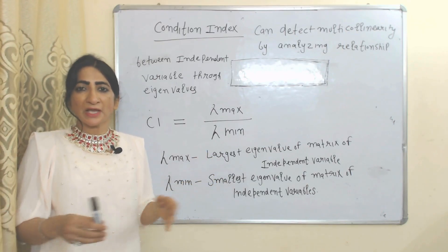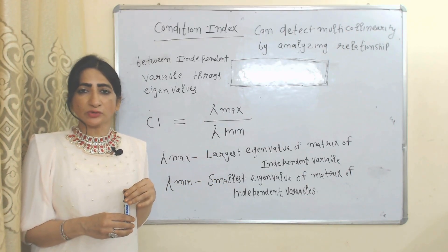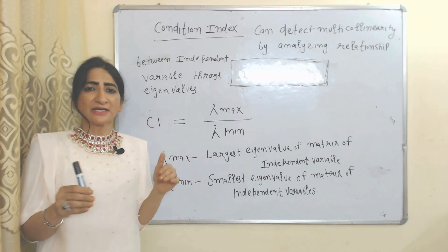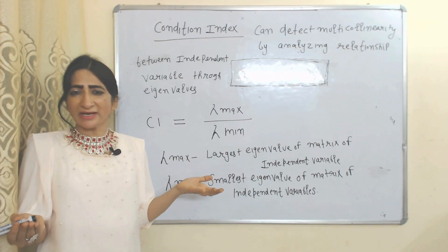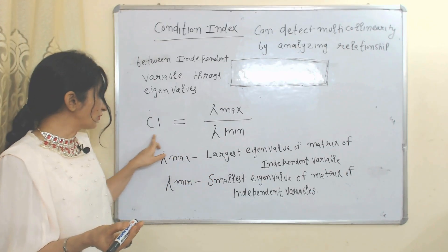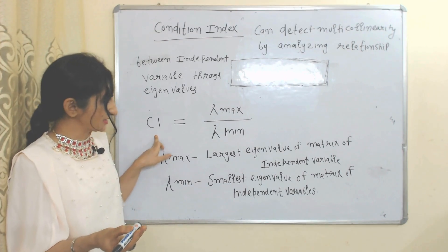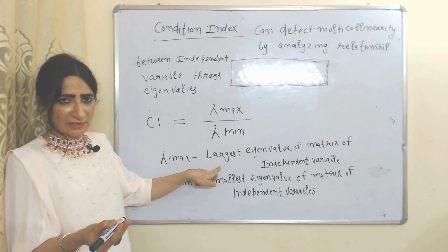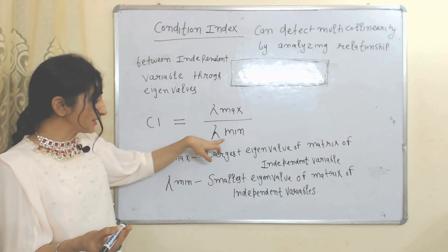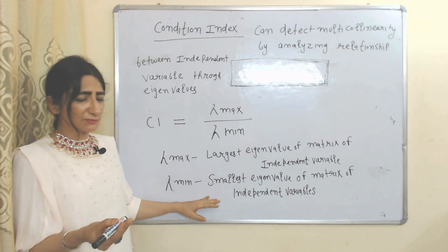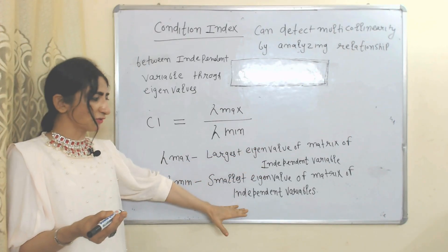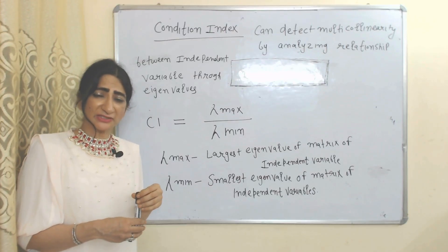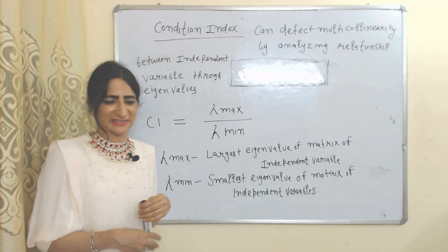Condition index can also detect multicollinearity by analyzing the relationship among independent variables through their eigenvalues. The formula for condition index uses lambda maximum — the largest eigenvalue of the matrix of independent variables — divided under lambda minimum, the smallest eigenvalue. This covers all about multicollinearity. Thank you so much for watching this video. Take care, bye.